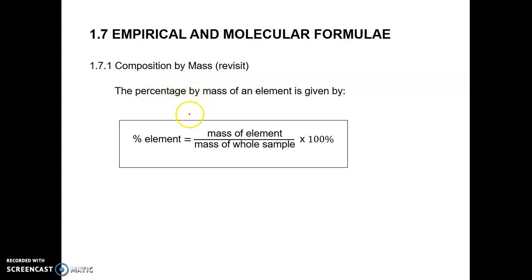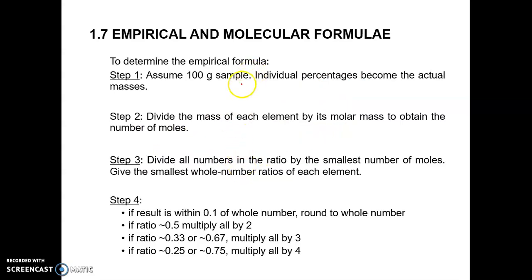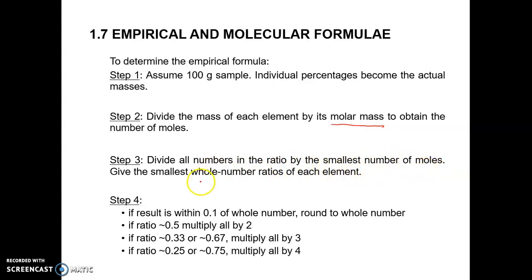As a review, the percentage by mass of an element is given by a standard formula. Here are the steps to determine the empirical formula. Step 1: assume a 100 gram sample, so the individual percentages become actual masses. Step 2: divide the mass of each element by its molar mass to obtain the number of moles. Step 3: divide all numbers in the ratio by the smallest number of moles to get the smallest whole number ratio of each element.